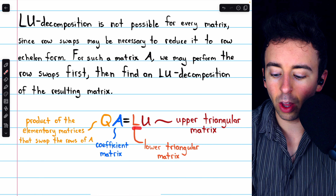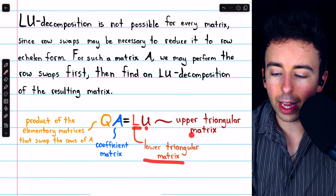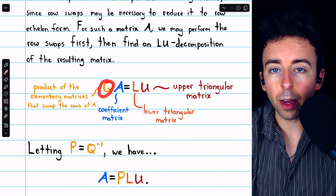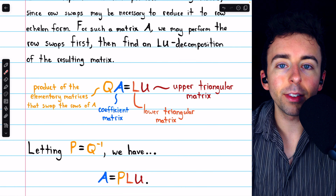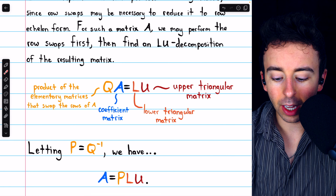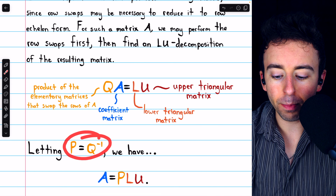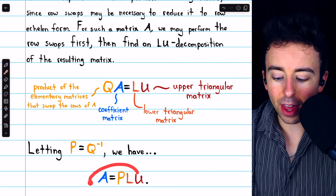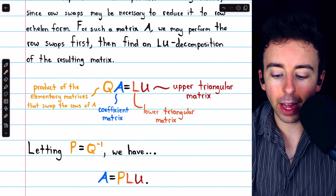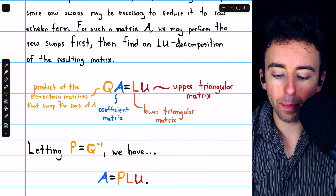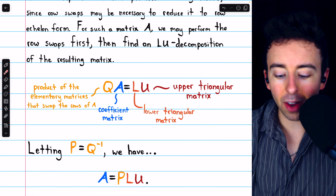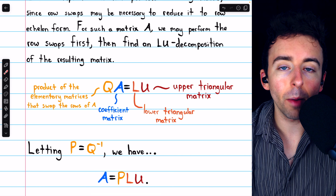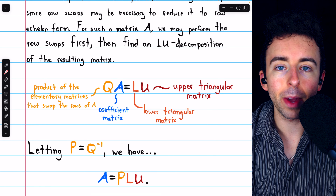So we could say QA equals L, a lower triangular matrix, times U, an upper triangular matrix. Q, being a product of elementary matrices, certainly has an inverse. If we call its inverse P, then we can rewrite this equation by multiplying on the left on both sides by P, which is Q inverse. And then we get A equals PLU, a PLU decomposition of the matrix A.